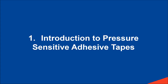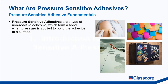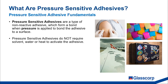Let's talk about the technology of pressure sensitive adhesives and how they work. Simply put, they are a type of non-reactive adhesive which forms a bond when pressure is applied to bond the adhesive to a surface. They do not require a solvent, water, or heat to activate the adhesive.